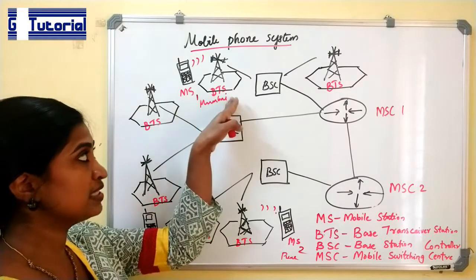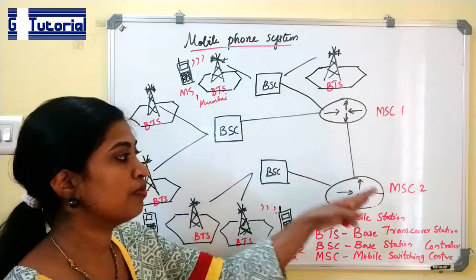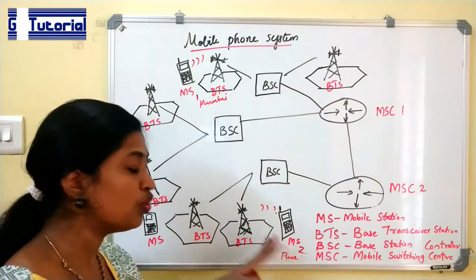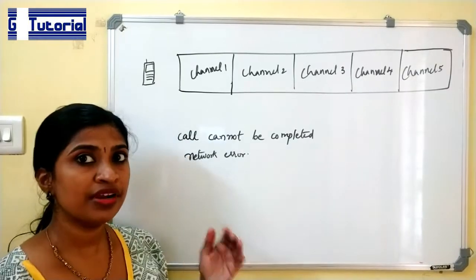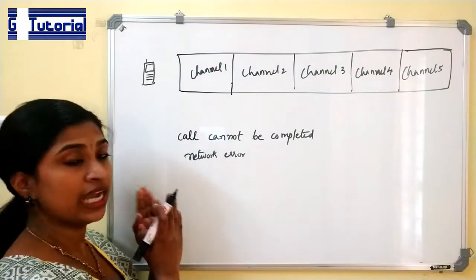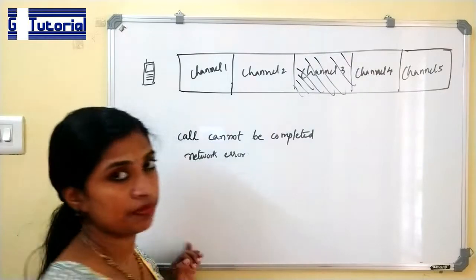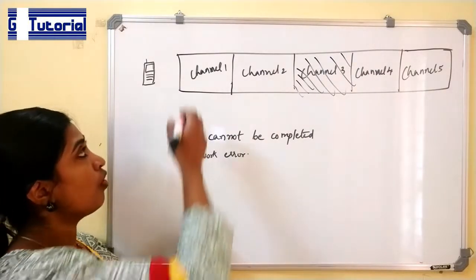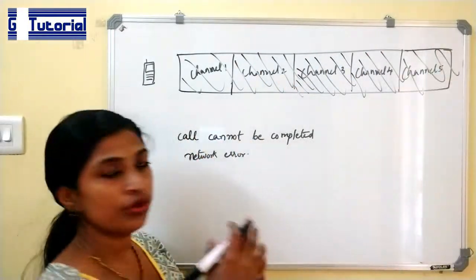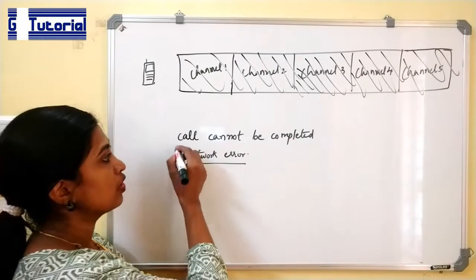The signal is first transmitted to the base station, then to the base station controller, then to the mobile switching center of that area, then to the mobile switching center of the second area, then to BSC, then to BTS, and finally to MS2. The MSC allocates a separate channel for each user. If all channels are occupied, the user must wait, and gets either a network error notification or a 'call cannot be completed' message.